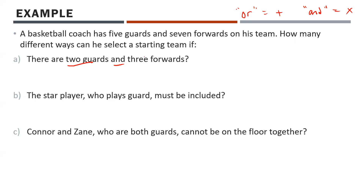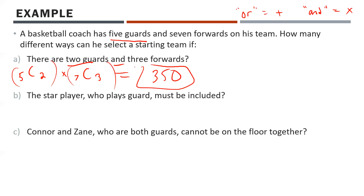Condition A: exactly two guards and three forwards. We choose two guards from five — that's 5C2 — and we multiply by choosing three forwards from seven — that's 7C3. The order of picking doesn't matter, so these are combinations. Throwing that into the calculator gives 350 possible starting teams.